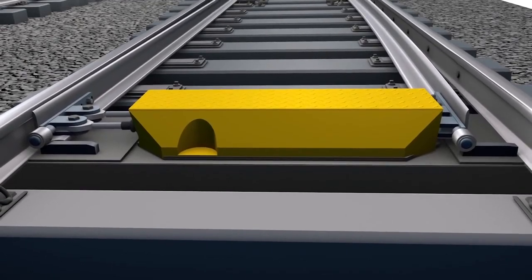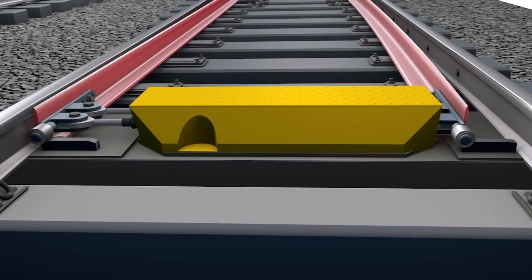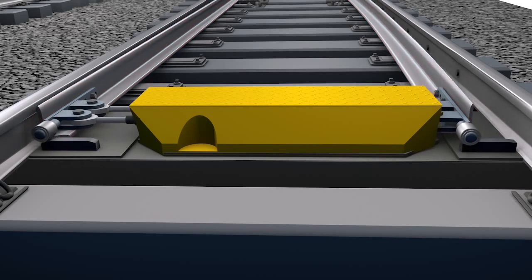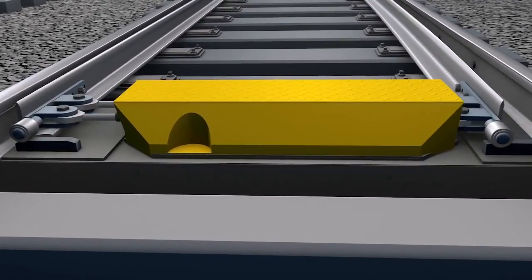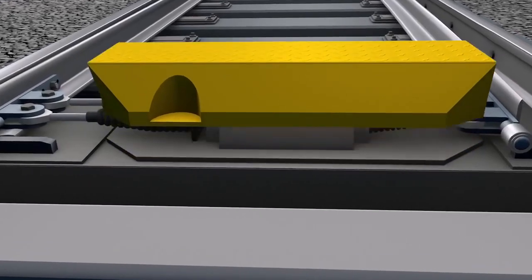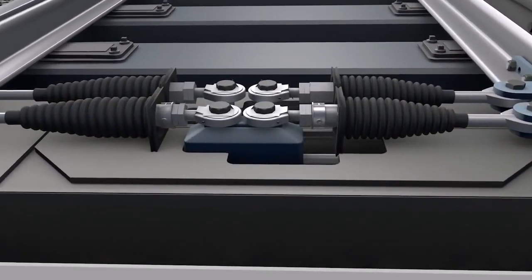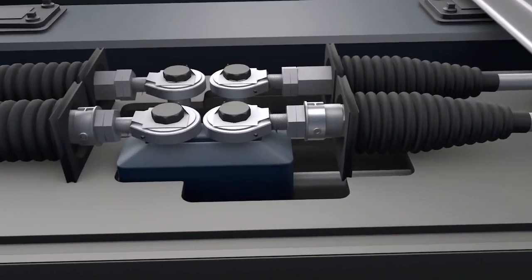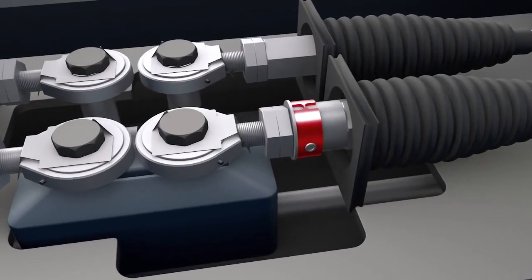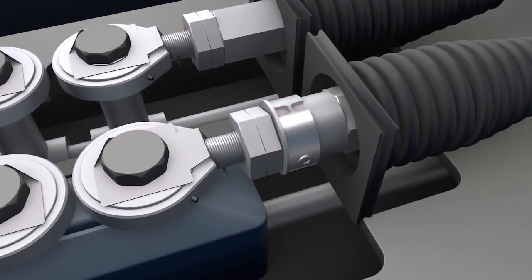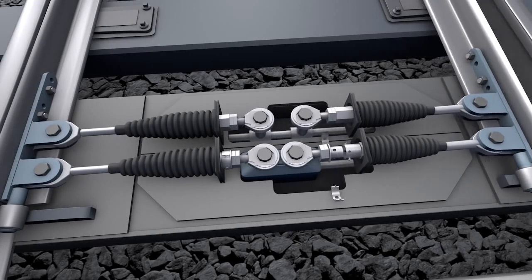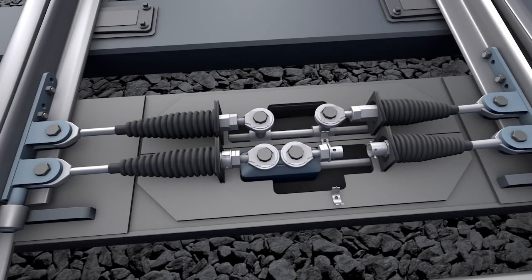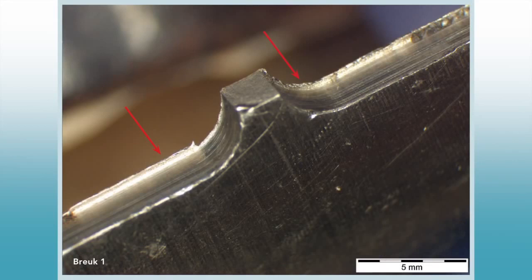A switch has two movable ends, the switchblades. They are operated by a point machine — in this case, an AB switch. This point machine was equipped with a release mechanism containing a ring. Technical investigations revealed that the train derailed because this ring broke suddenly due to fatigue. First of all, the ring revealed finishing defects, making the ring more susceptible to fatigue.